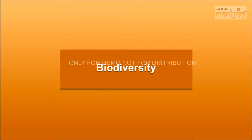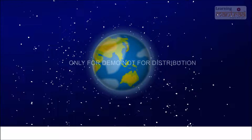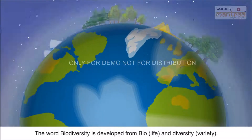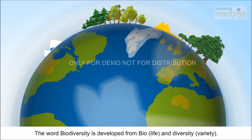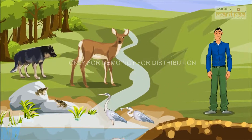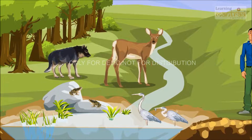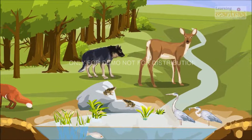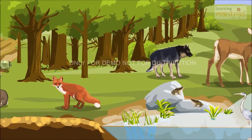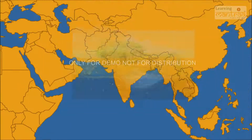Biodiversity. The word biodiversity is developed from bio, life, and diversity, variety. It is the number of genes, species, and ecosystems within a defined geographic location.